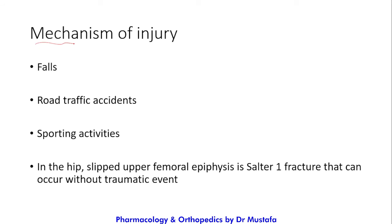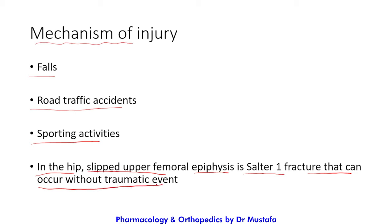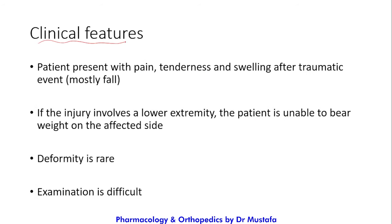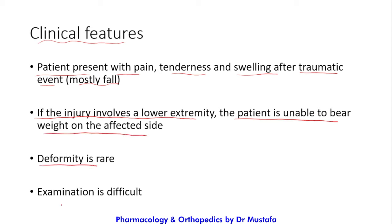The mechanism of injury for physeal fractures is most commonly a fall. Other causes include road traffic accidents and sporting activities. In the hip, slipped upper femoral epiphysis is a Salter Type 1 fracture that can occur without a traumatic event. Clinical features include pain, tenderness, and swelling after trauma. If a lower extremity is involved, the patient is unable to bear weight, and deformity is rare.